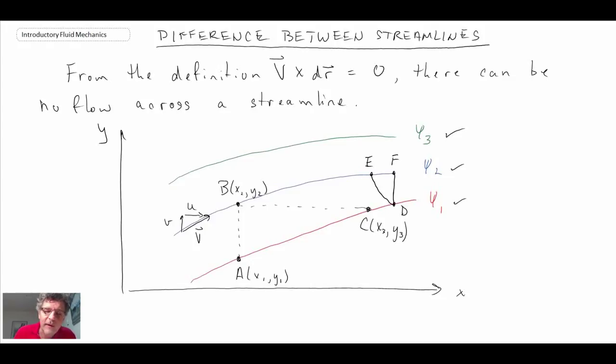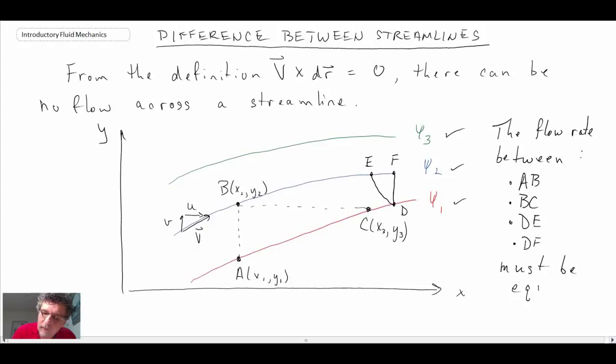From what we said, the flow always needs to go tangential to the streamline. What that means is that between any of these lines, the flow rate needs to be constant. Given that each of those lines is going between stream functions, the flow rate between any of those lines needs to be the same, or along any of those lines.